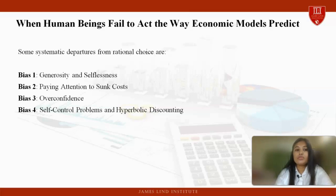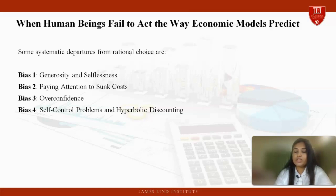The second bias is paying attention to sunk costs. Rational decision makers think at the margin and only consider opportunity costs. But in reality people are influenced by sunk costs in decision making. The sunk cost fallacy occurs when we are unable to cut our losses due to past expense, experience, money, or time we have spent on an activity.